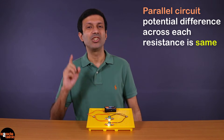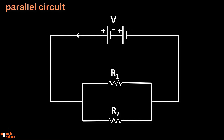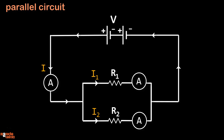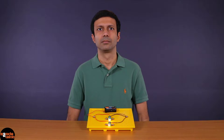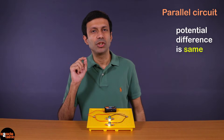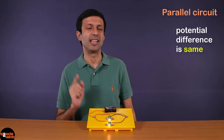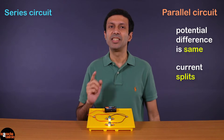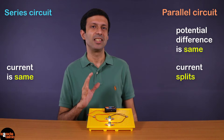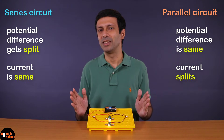Now let's look at the current flowing in each resistance. Let's say the main current is I. I splits into two parts, I1 and I2 — the current in each branch is different. If you put an ammeter to measure the main current I and an ammeter in each branch, you will observe that I equals I1 plus I2. In a parallel circuit, the potential difference across the resistances is the same but the current splits. In a series circuit it is the opposite — the current in the resistances is the same but the potential difference gets split between the resistances.